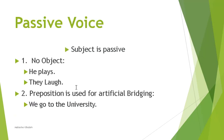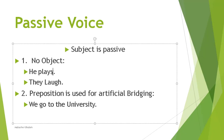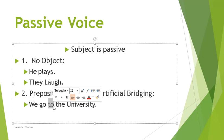There are two conditions of intransitive verbs. One is like 'he plays' — there is no object, so the action cannot transit. Another is when artificial bridging is used, like 'we go to the university' — 'go' is an intransitive verb and 'to' is the artificial bridging. In both cases, passive cannot be made. So sentences with intransitive verbs — whether they have no object at all or use a preposition bridge — cannot be converted to passive. This is the first exception.